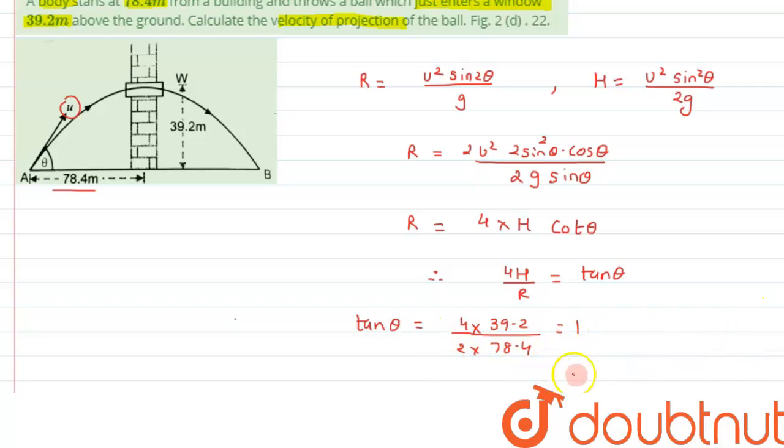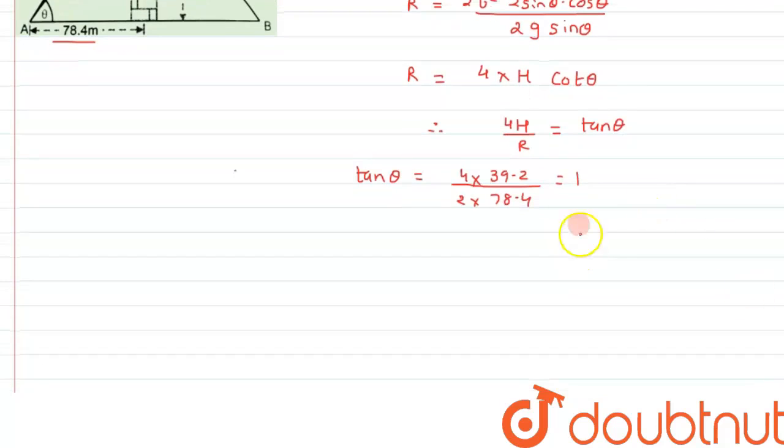This result comes out to be 1. Therefore we can say the value of theta will be 45 degrees.